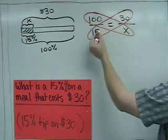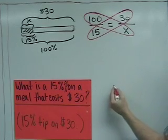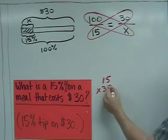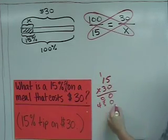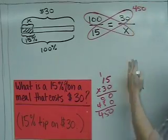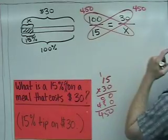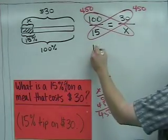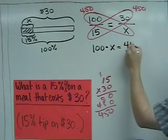15 times 30 is, let's see, 15 times 30 over here on the scratch paper, way down here. 15 times 30 is 450. So this is 450, which means this cross product is also 450.